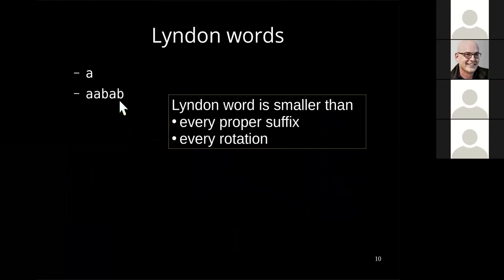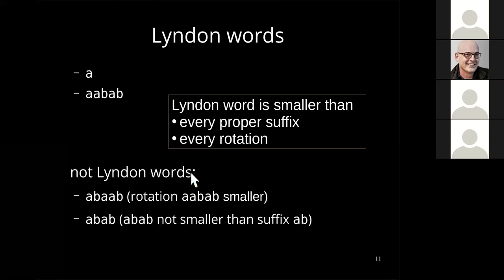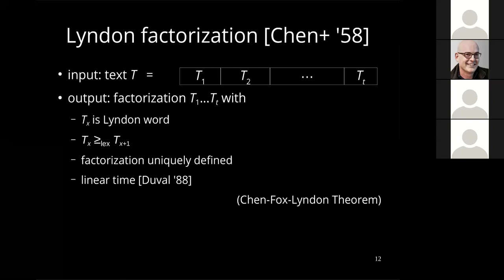For the Lyndon factorization we need to know what Lyndon words are. For instance, 'a' and 'aabab' are Lyndon words, because a Lyndon word is smaller than every proper suffix, or equivalently lexicographically smaller than every rotation. Counter-examples: 'abaab' is not a Lyndon word because 'aabab' is a rotation of it; 'abab' is not a Lyndon word because the suffix 'ab' is smaller than 'abab'.